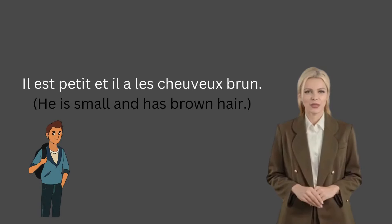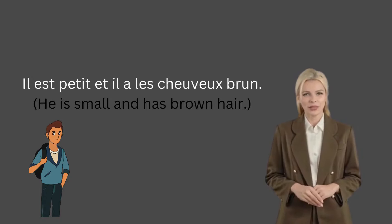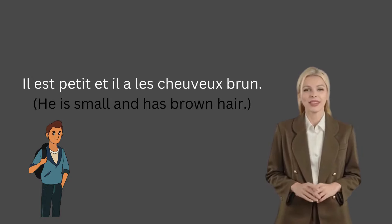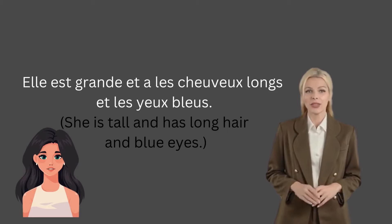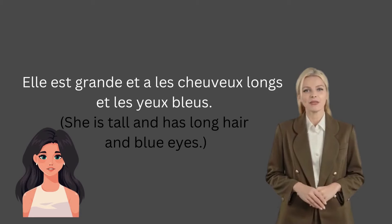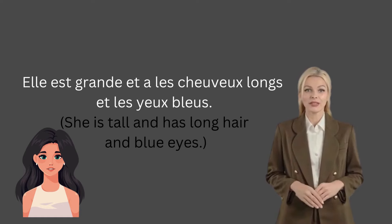Try to mix those adjectives in sentences. For example: Il est petit, il a les cheveux bruns — He is small and has brown hair. Exemple 2: Elle est grande et a les cheveux longs et les yeux bleus — She is tall and has long hair and blue eyes.